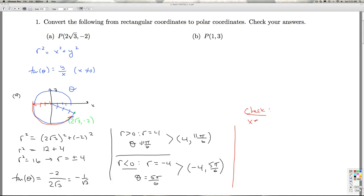I can check it using the formulas x equals r cosine theta, y equals r sine theta. So if I look at the 4 comma 11 pi over 6,